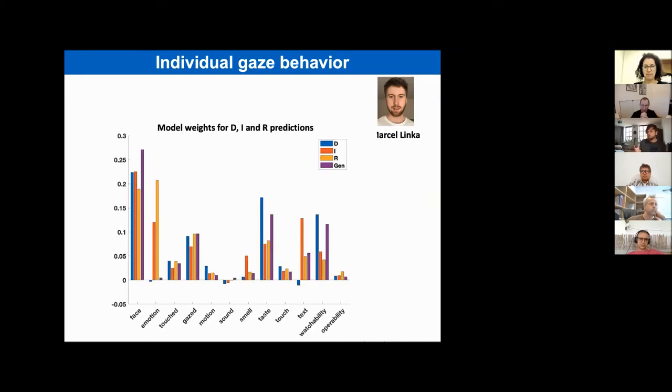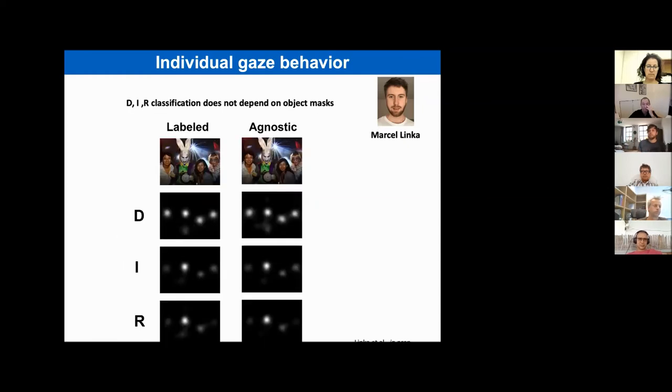The distinction between detection, inspection, and return fixations matters when we try to understand which parts of an image attract fixations. When we fit a salience model separately to each type of fixation, we see that some of the predictor weights vary wildly between fixation types. Whether or not a face has an emotional expression makes no difference for detection fixations, but emotional expressions strongly compel us to drill deeper on the face with inspection fixations and to come back with returns. Similarly, the salience of text objects is mainly due to inspection because this is the way reading works.